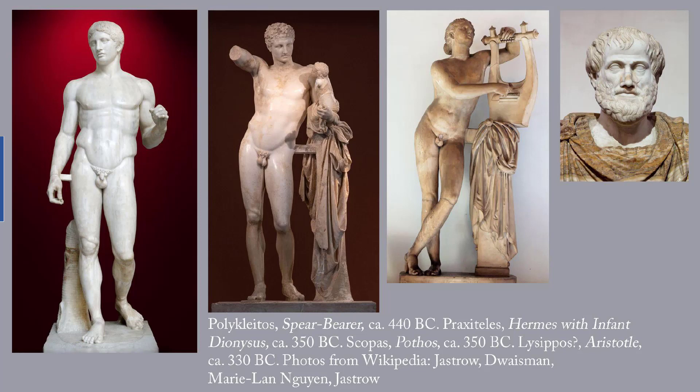Another innovation in this period is the portrayal of emotion by means of facial expression rather than just by gesture. Scopas' Pothos, meaning longing, is given as an example. Also during the Classical period, there is an interest in figures that are realistic rather than idealized. The portrait of Aristotle at the upper right is the earliest really realistic-looking portrait that we have.